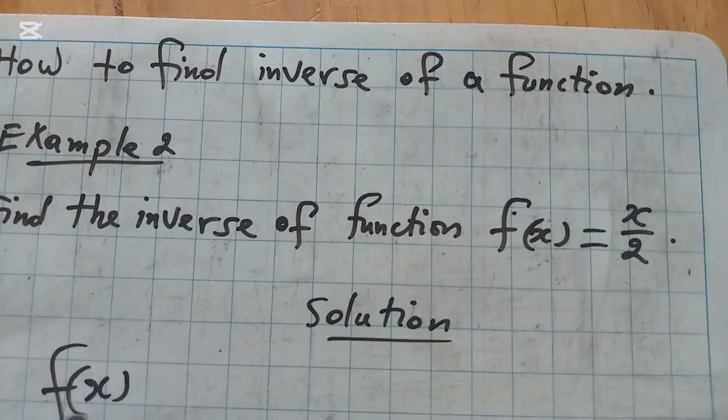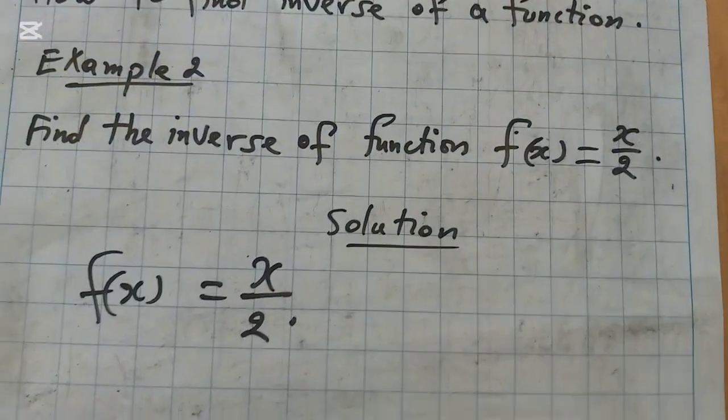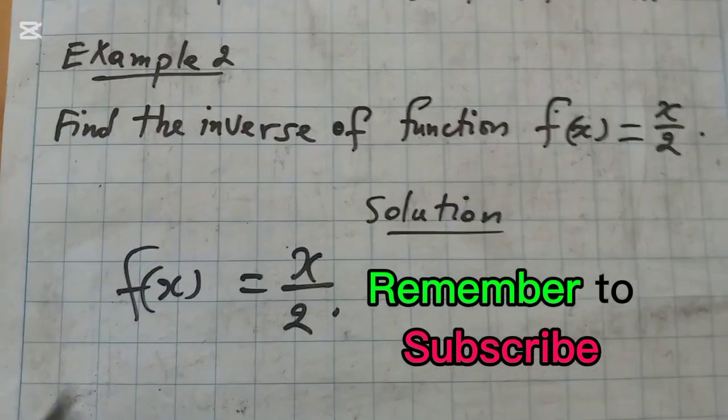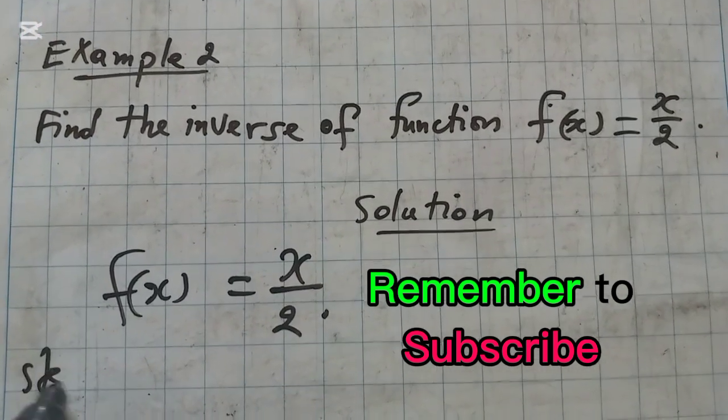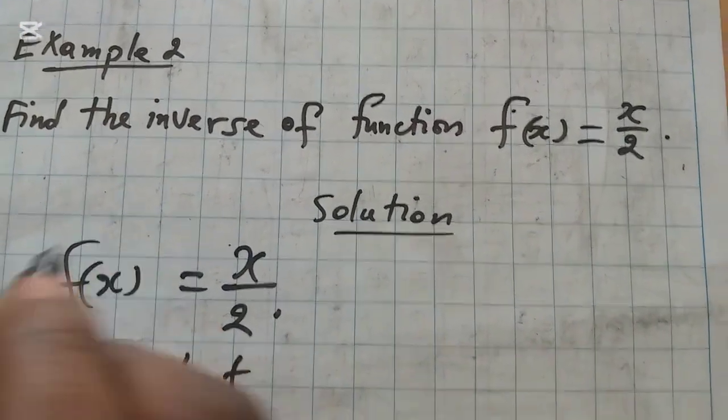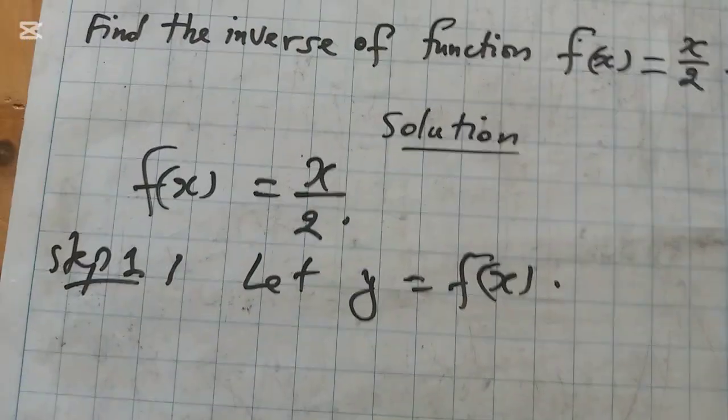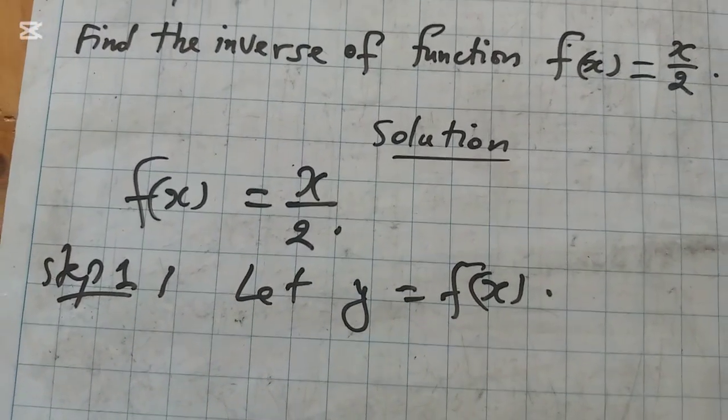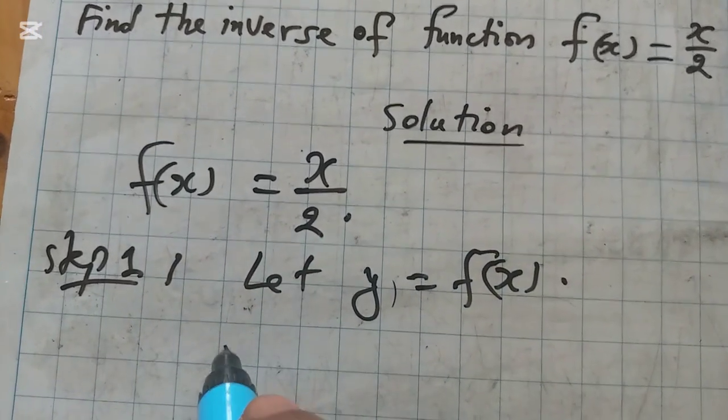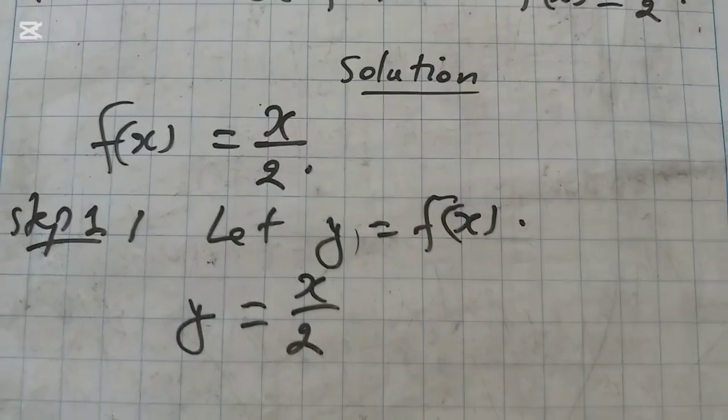We have function f(x) which is equal to x over 2. There are different number of steps that we follow to find the inverse of a given function. For step number 1, we write f(x) equal to y. This f(x) equals y. So this y is going to be written in place of f(x). So we have to write y equals x over 2.